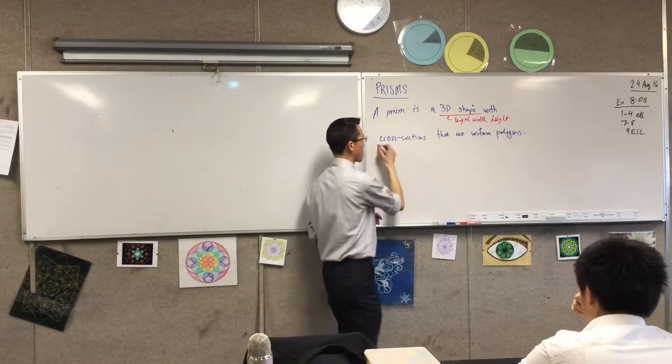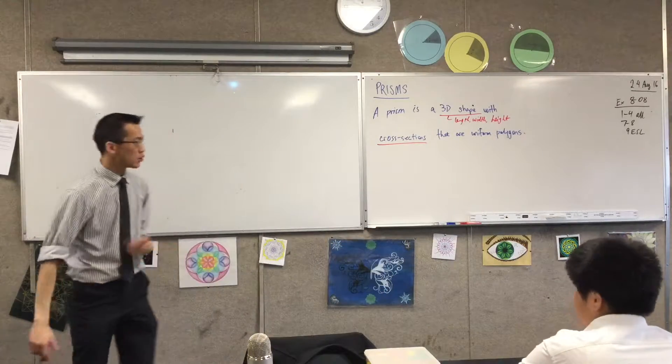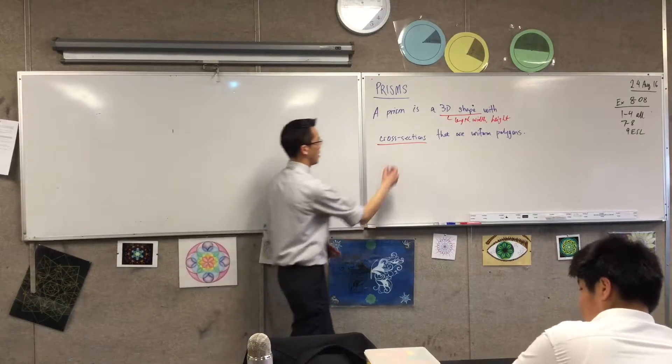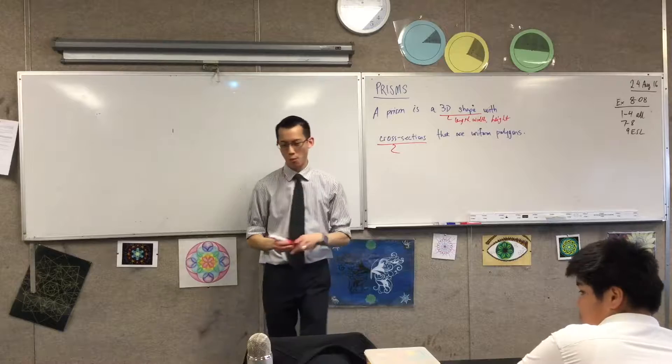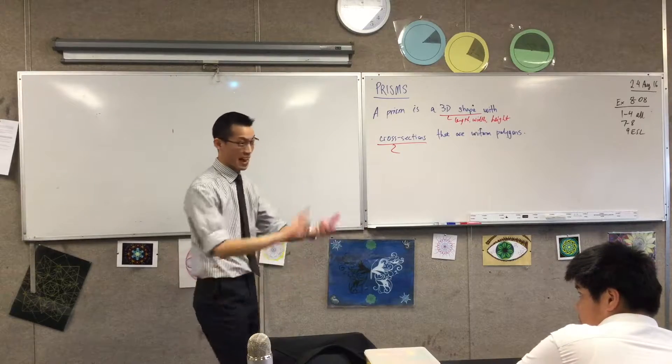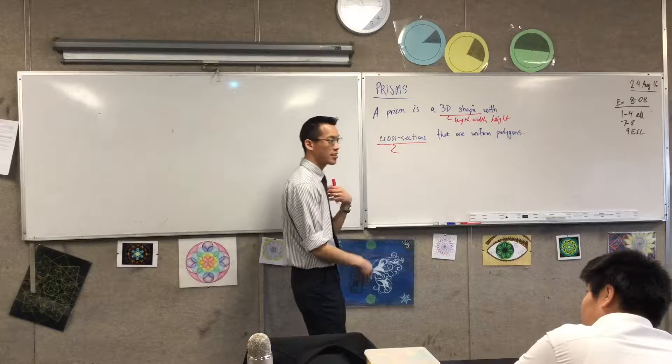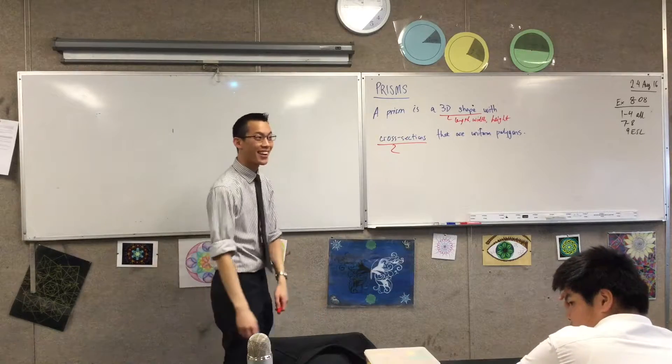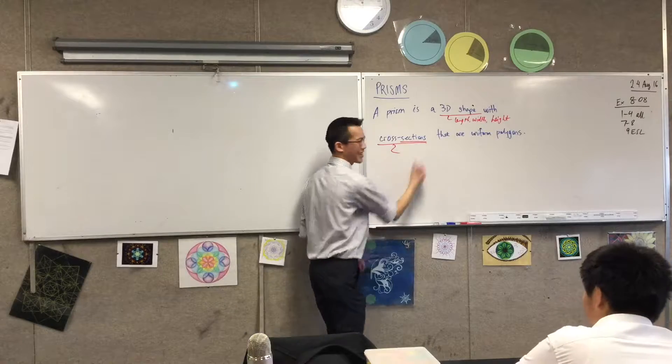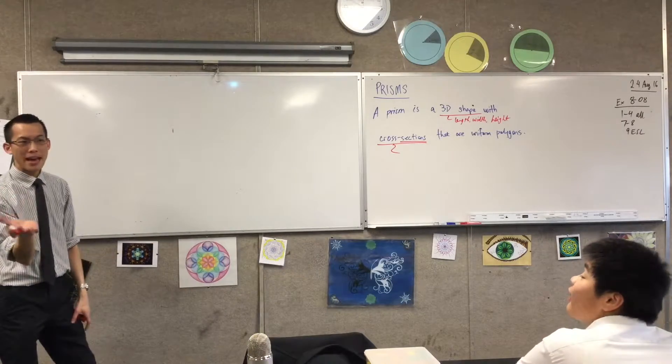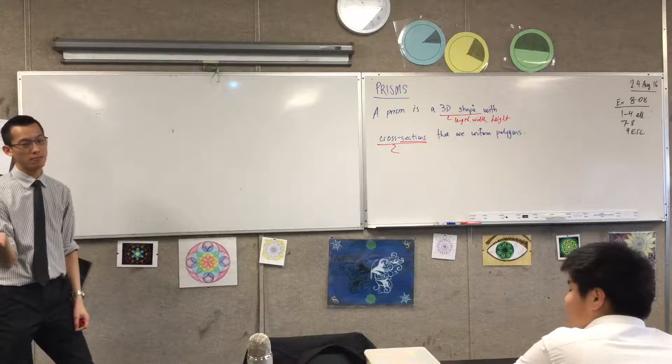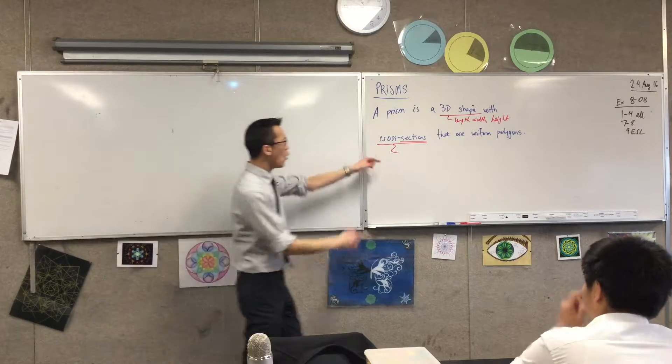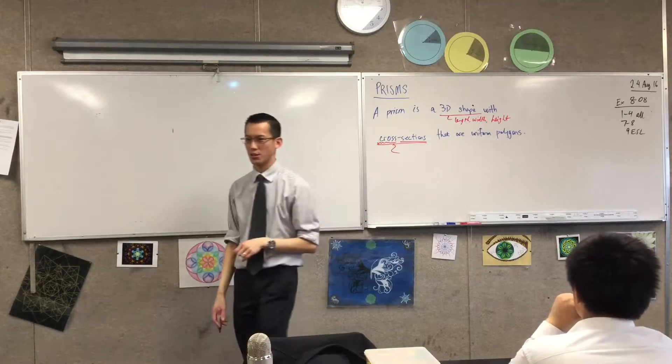Next thing we want to unpack, cross sections. Section just means cutting something up. For example, you might know when pregnant mothers are giving birth, they'll have a natural birth, or they'll have what we call a caesarean section. So it's cutting. You might say, my assignment has three sections in it. All that means is you can cut it into three pieces. What do you think this word, cross, adds to it?